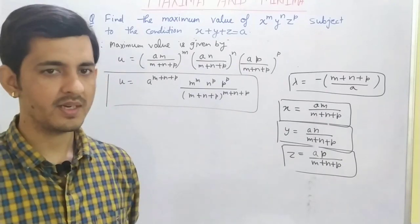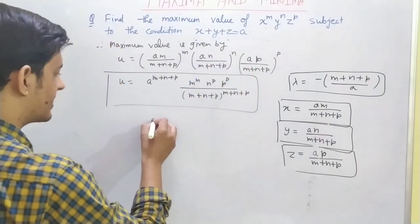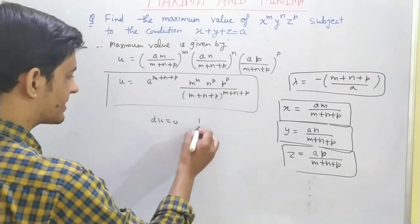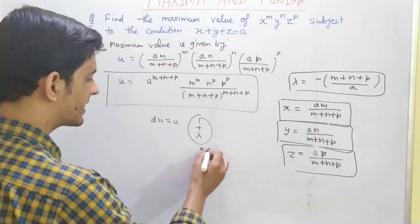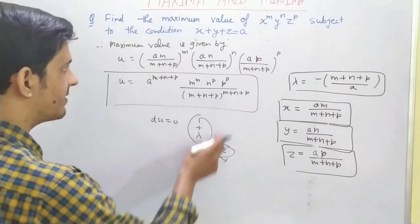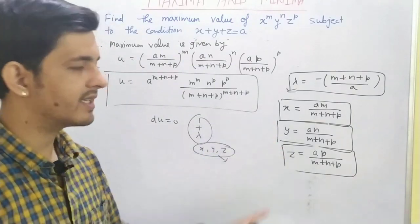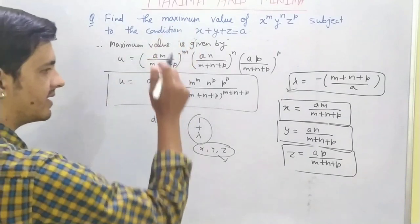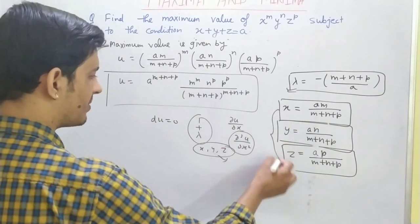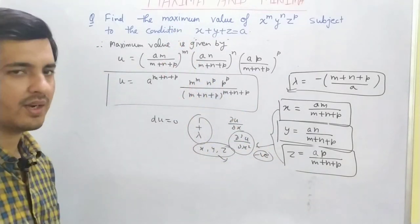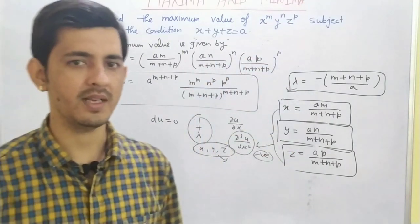So to summarize the method: find du = 0 from the given function; differentiate the condition, multiply equation 1 by 1 and condition by λ, add them, equate coefficients of dx, dy, dz to zero; find x, y, z in terms of λ — that's the stationary point. Substitute x, y, z into the condition equation to find λ, then back to get actual values. Then find ∂u/∂x and ∂²u/∂x² — if ∂²u/∂x² is negative at that point, function is maximum. Substitute x, y, z into u to get maximum value.